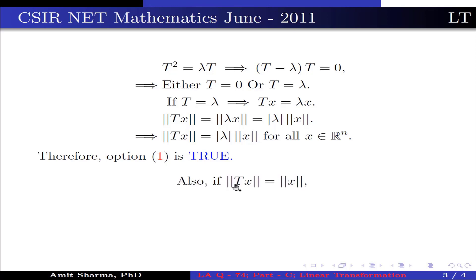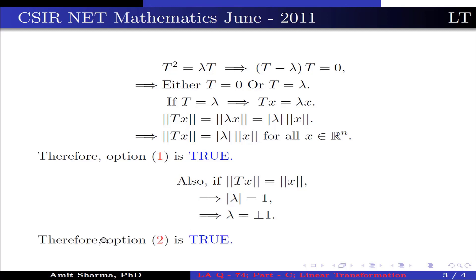Also, if ||Tx|| = ||x||, this implies |λ|·||x|| = ||x||, which implies |λ| = 1, so λ = ±1. Therefore option 2 is true.